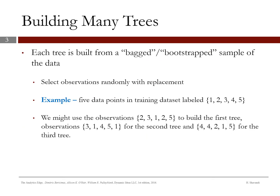Bootstrap sampling is selecting observations randomly with replacement. For example, if we have five data points labeled one through five, a bootstrapped sample of five might be: two, three, one, two, five — notice two appears twice since replacement is allowed. Further samples could be three, one, four, five, one or three, four, four, two, one, five, and so on.